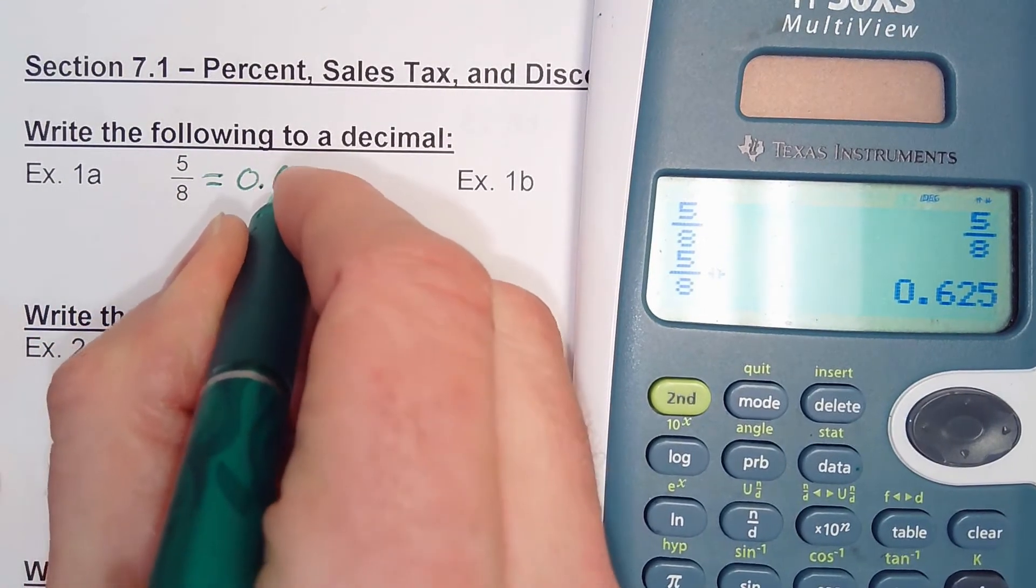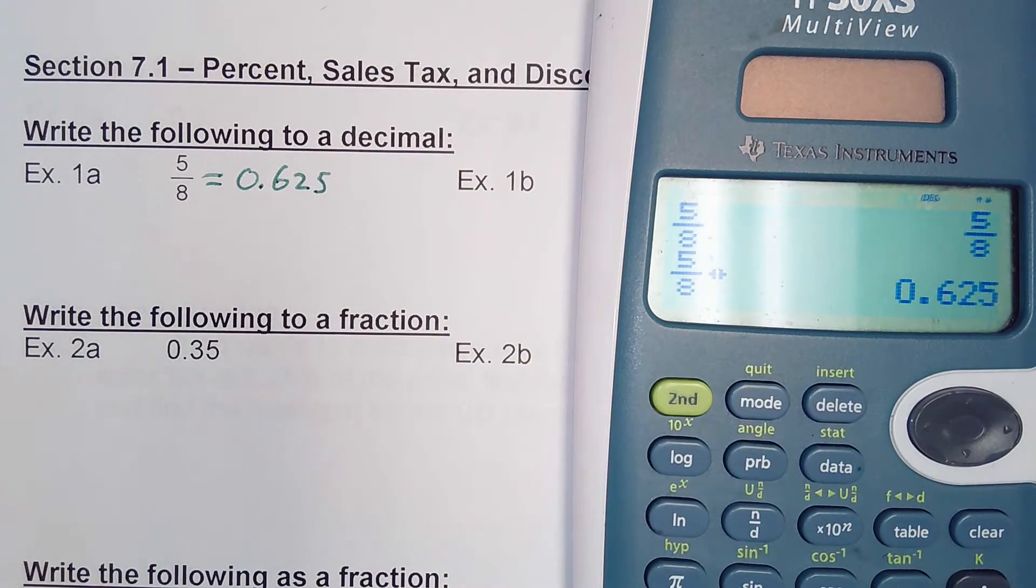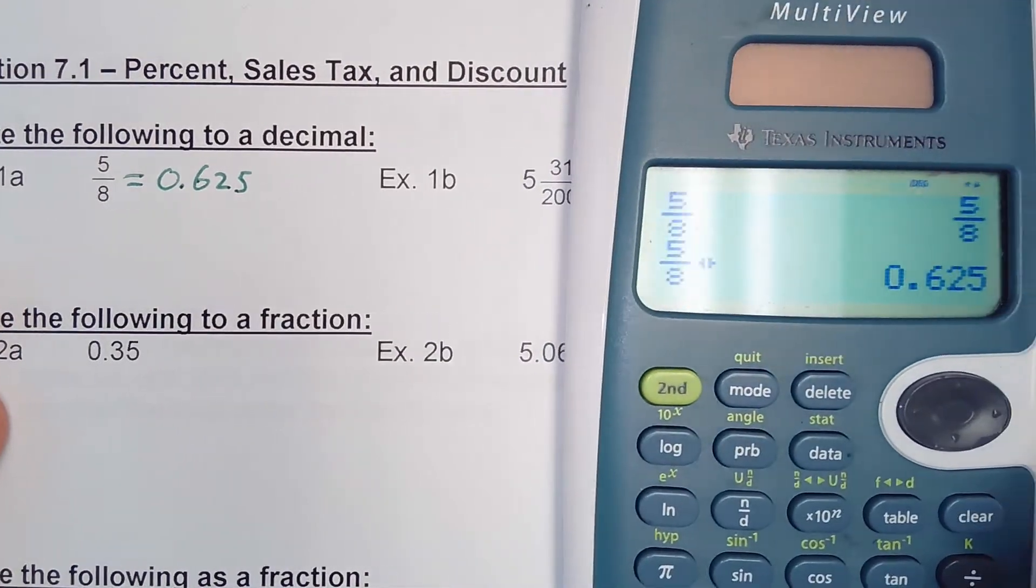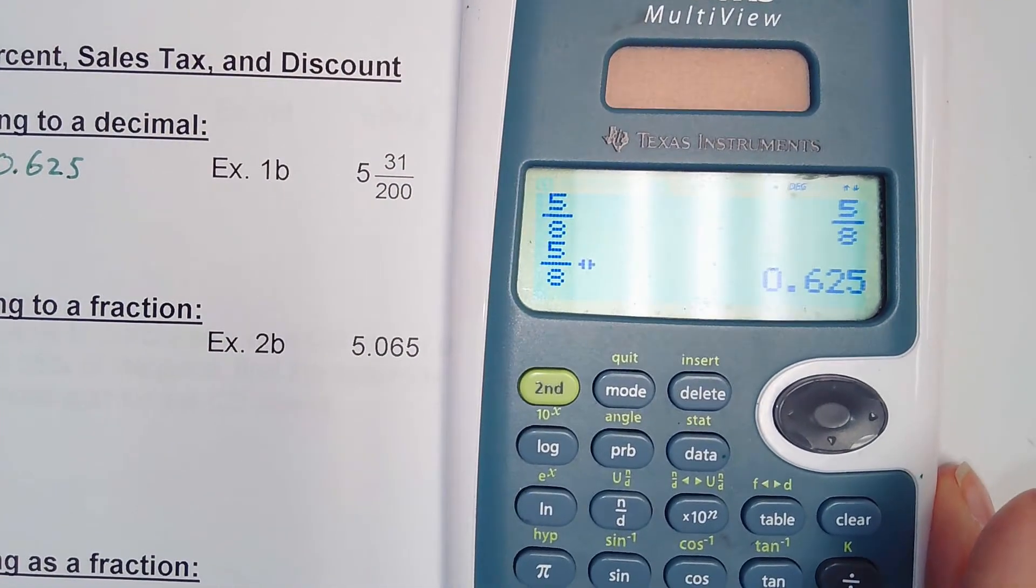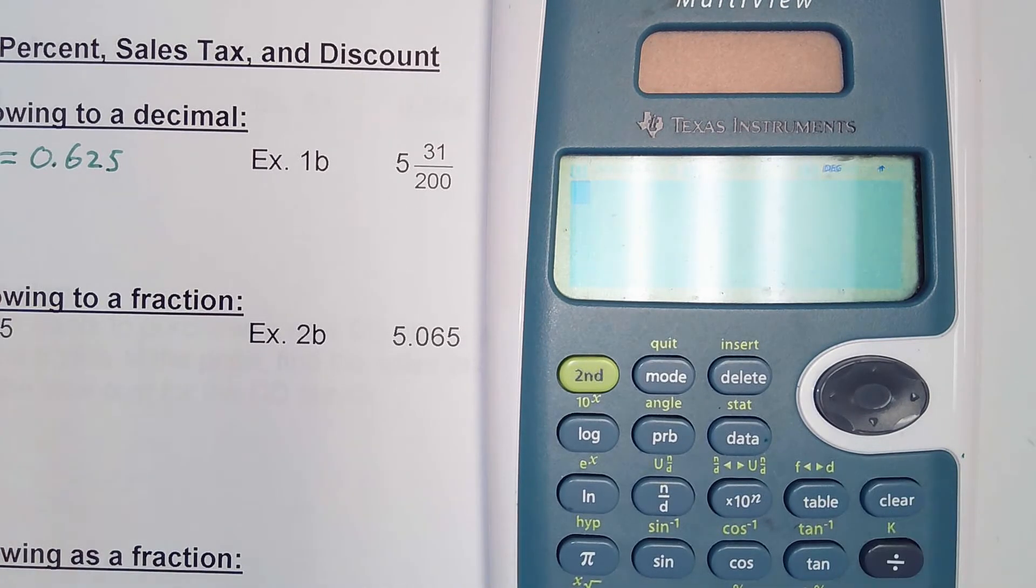You should know how to do that by hand, but in this chapter I need to be able to do those very quickly, so I want you using your calculator. Let's look at 1B. Clear the screen, sorry for the glare on the calculator. I'm going to enter the mixed number. Look at the fraction key, and right above it in green you've got your mixed number key, so you're going to hit the second key.